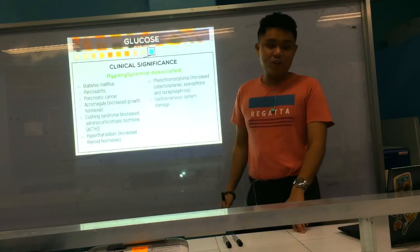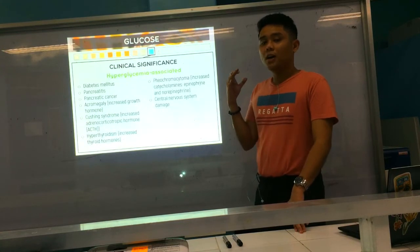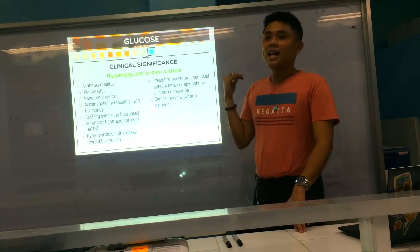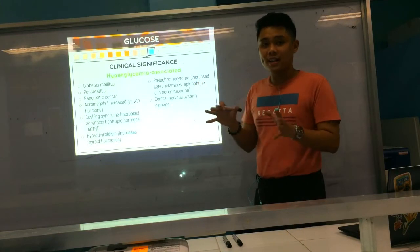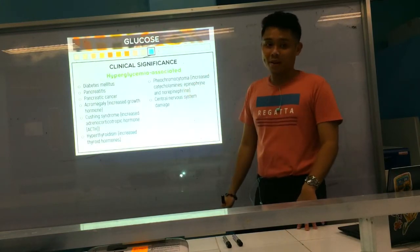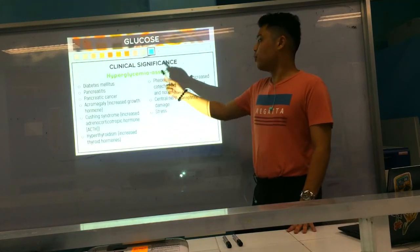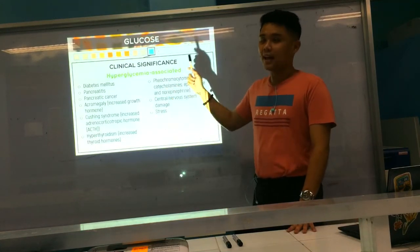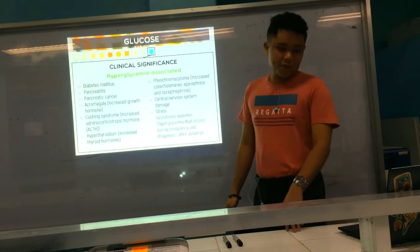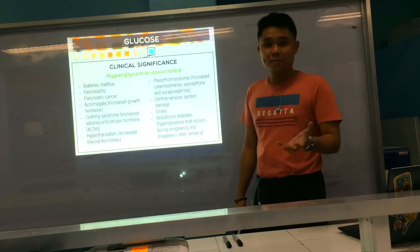The last two are CNS damage — because glucose metabolism occurs in the CNS, and if it is damaged, glucose leaks from blood vessels, increasing glucose levels — and stress, which promotes the release of catecholamines and other hyperglycemic hormones. You also have GDM, or gestational diabetes, which is hyperglycemia occurring during pregnancy.